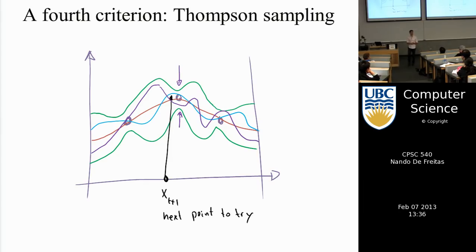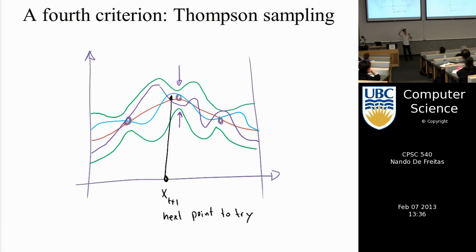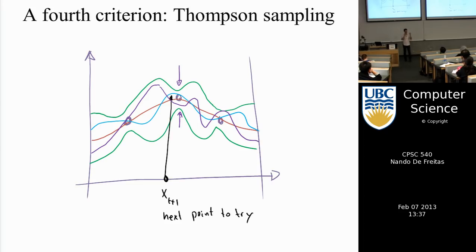A student asks: why not just pick the next point as the one with the highest uncertainty? Because then you'd just be learning the whole function, which wastes effort. The objective is to find the location of the maximum or minimum — you don't need to know the entire function. To learn the whole function you'd sample where variance is largest, which is pure exploration. Instead, you want to minimize the number of exploration steps and focus resources on exploiting.